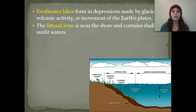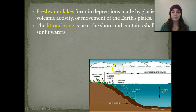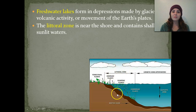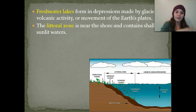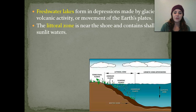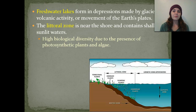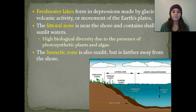In the lake, we have a littoral zone. This is near the shore, and it contains the shallow, sunlit waters. It also has a lot of floating plants. Some of the plants get submerged by water, and some of them are in an area where they're sometimes submerged, sometimes not. We have a high biological diversity in this area due to the presence of photosynthetic plants as well as algae.